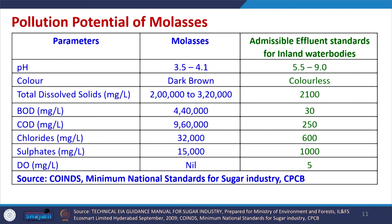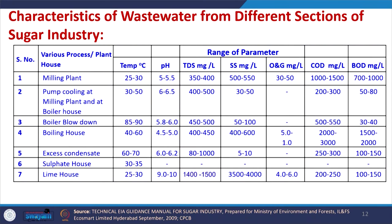With respect to molasses, it goes to the distillery so it is already taken care of. The characteristics of molasses show that total dissolved solids may be from 2 lakh to 3 lakh 20,000. The BOD, COD, and chlorides are all very high values, which is why it is handled separately through alcohol production. The characteristics of different wastewaters generated in different sections of the sugar industry — from various processes or plant units — show pH, TDS, SS, oil and grease, COD, and BOD values.